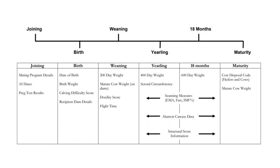The Breedplan performance recording timeline has been developed to assist beef producers identify when each of the Breedplan traits should be recorded. It has been divided into the different life stages of an animal and outlines which Breedplan traits to record at joining, birth, weaning, yearling, 18 months and maturity.